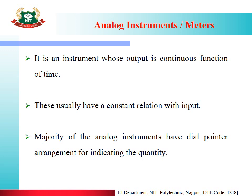First of all, we will see Analog Instruments or Analog Meters. An analog instrument is an instrument whose output is a continuous function of time. They usually have a constant relation with input. The majority of analog instruments have a dial pointer arrangement for indicating the quantity, and readings are in terms of the pointer arrangement.